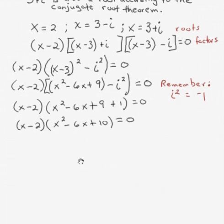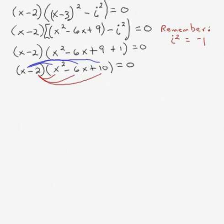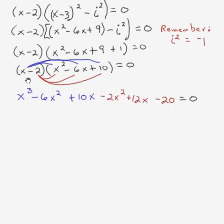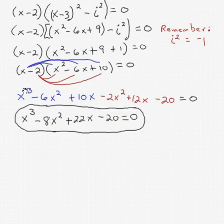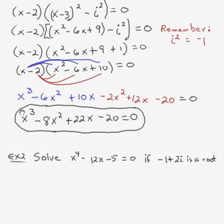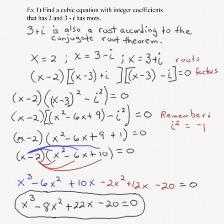Now we've got a binomial times a trinomial, like in Chapter 4 — think of it as double the distributive property. Everything in the trinomial gets multiplied by the first term of the binomial, then by the second term. In blue: x times x squared is x cubed; x times negative 6x is negative 6x squared; x times 10 is 10x. In red: negative 2 times x squared is negative 2x squared; negative 2 times negative 6x is positive 12x; negative 2 times 10 is negative 20. Simplifying like terms: x cubed minus 8x squared plus 22x minus 20. That is the cubic polynomial from those three roots.